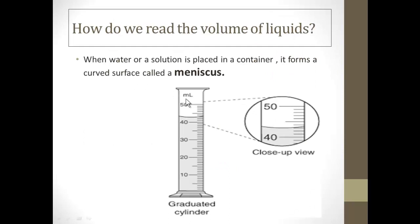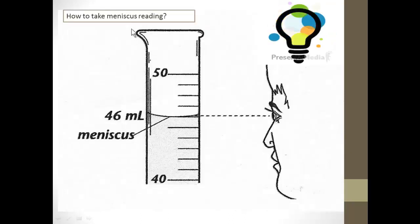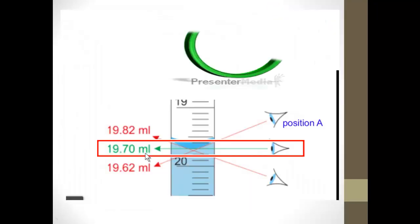The curved surface is called meniscus. How to take meniscus reading? By keeping your eye in front of the reading, which is 46 ml. The correct position for taking the reading is the center one, the red line.